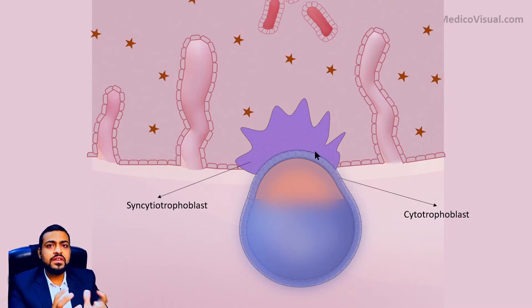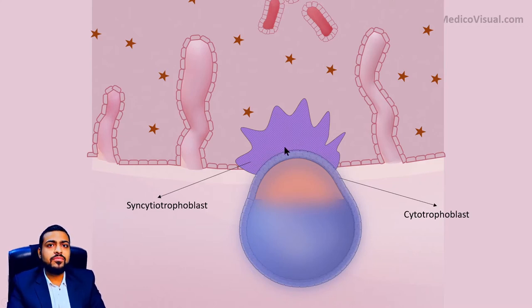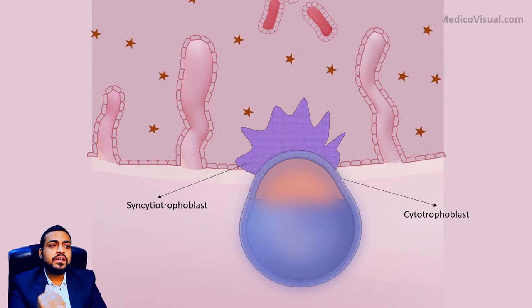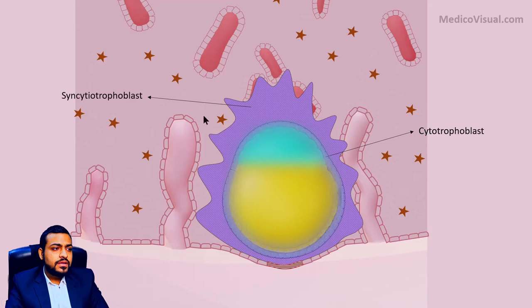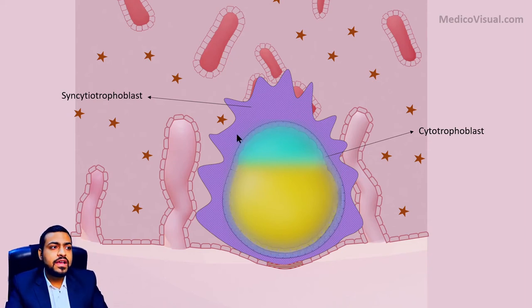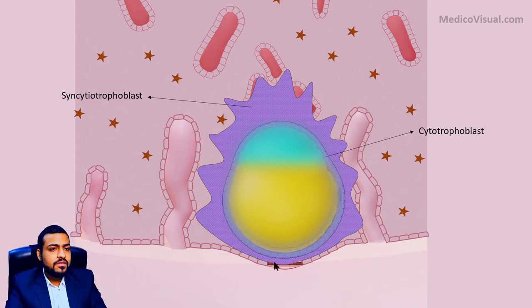As you can see in this diagram, the syncytiotrophoblast is initially present mainly on the embryonic pole. The embryo is partially embedded into the endometrium and completes this implantation process, becoming fully embedded into the endometrium by day 10. As the syncytiotrophoblast continues to erode the endometrial tissue, the embryo burrows deeper inside, and the syncytiotrophoblast will now surround the embryo from all sides. There will still be very little syncytiotrophoblast at the abembryonic pole.